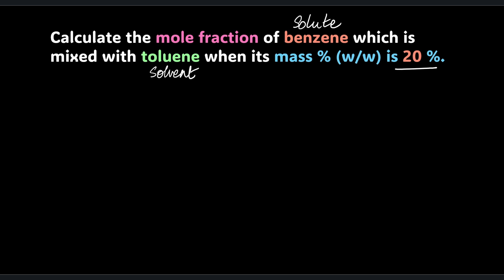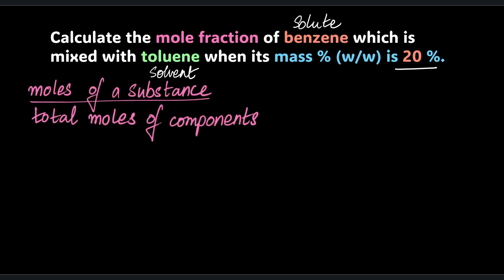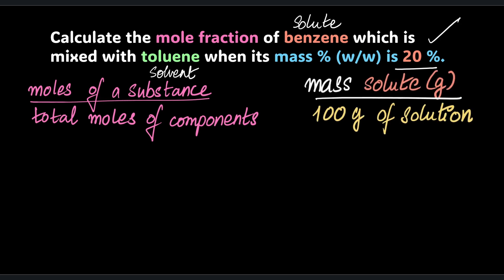Let's write down what we have. Mole fraction - what's the definition? Quickly write it down: moles of a substance divided by total moles of all the components. We need to find these moles. It's not given directly, but you can get there in one or two steps. What I do have is this: mass percentage weight by weight is 20%. What does that mean? Let's write down that definition as well. It's the mass of solute in grams in 100 grams of solution.